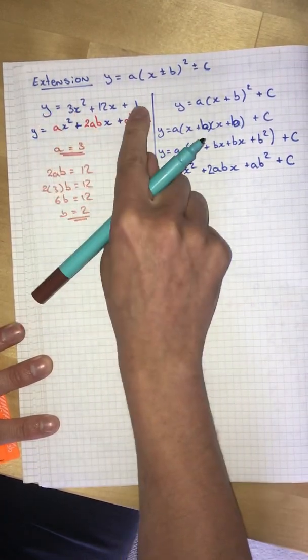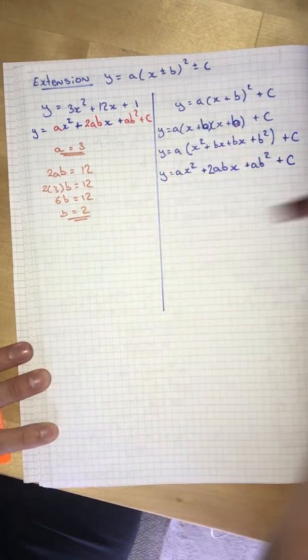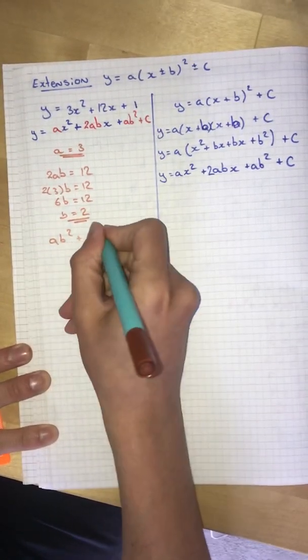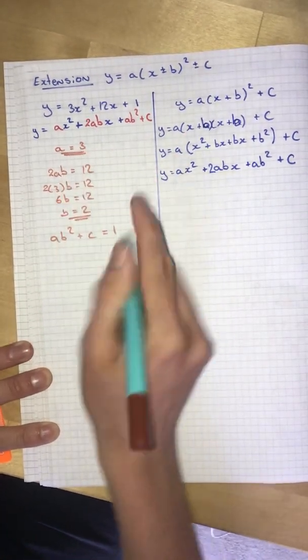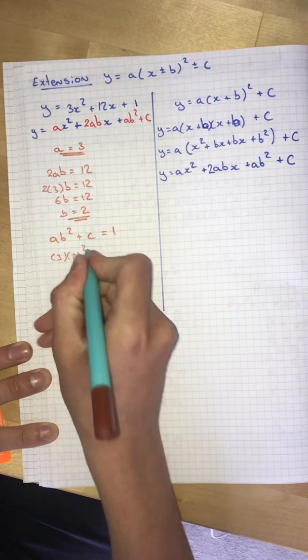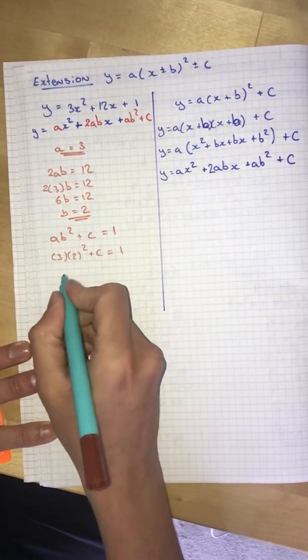And lastly, the coefficient of the constant is 1. And that's ab squared plus c. So we do ab squared plus c equals 1. We know that a is 3. We know that b is 2. And we're solving for c. 2 squared is 4 times 3 is 12.